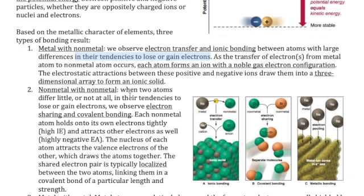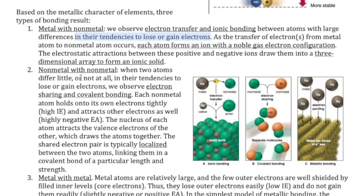Let's take a look at the second type of bond, which is bonding between non-metal and non-metal. Both of them don't like to give away their electrons because they have high ionization energy, but they like to pull electrons for themselves. The best arrangement is to share those valence electrons, and then we have a type of bonding called covalent bonding.